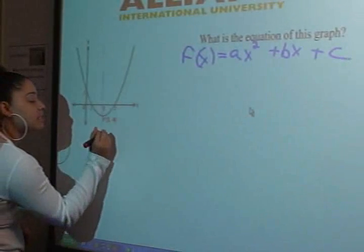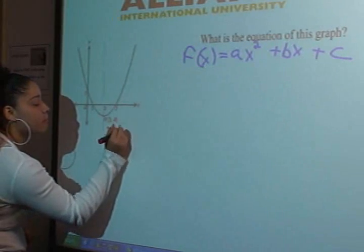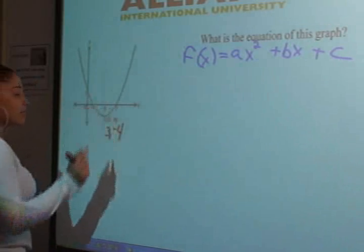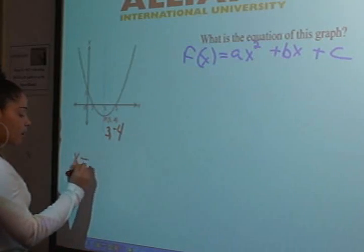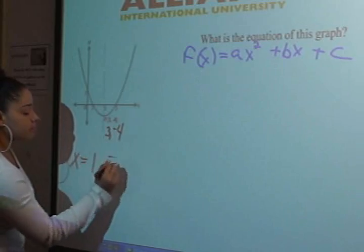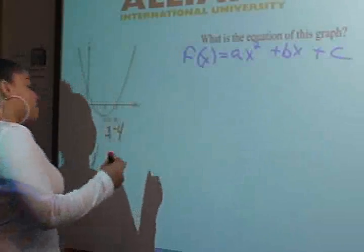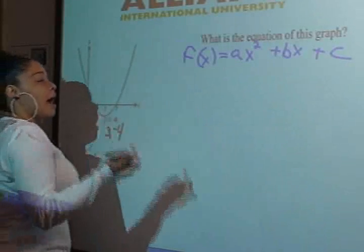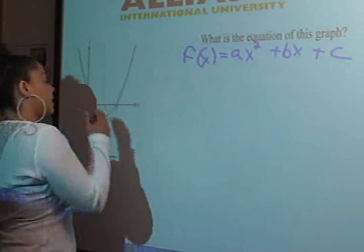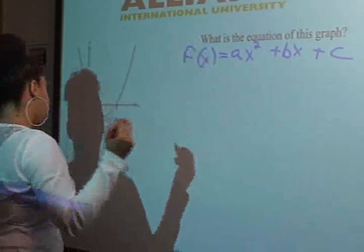Now we're given the vertex, you might be able to see it is 3 comma negative 4, and we're given two x-intercepts, 1 and positive 5. So all we have to do basically is follow how you were to find x-intercepts if you had a regular equation.